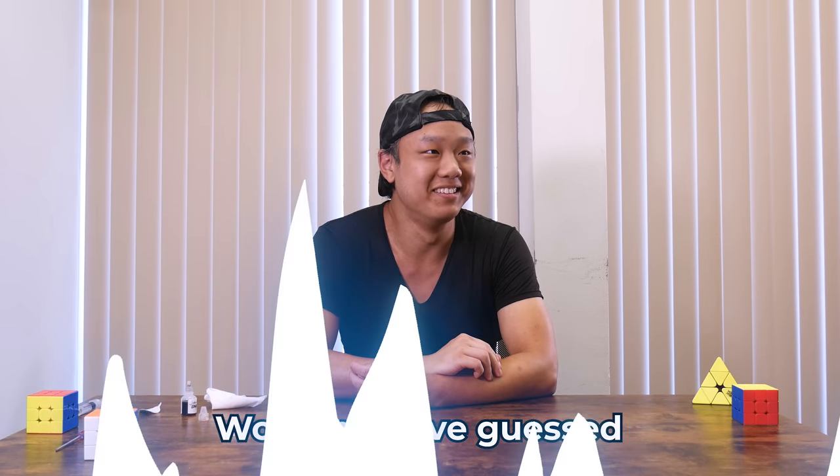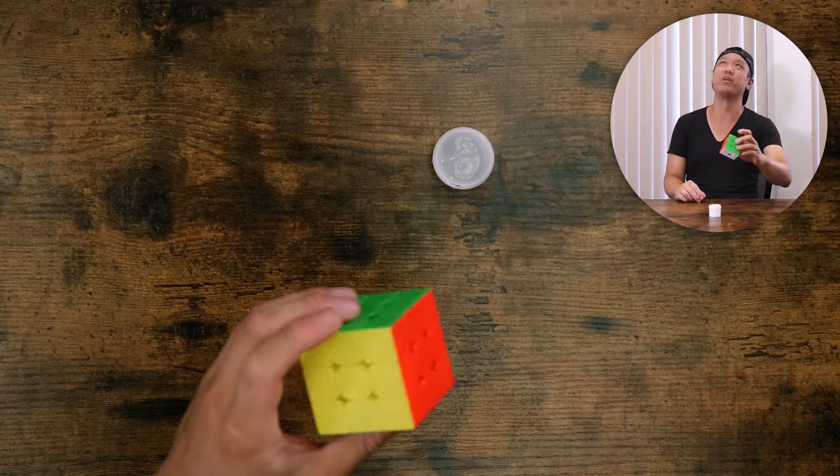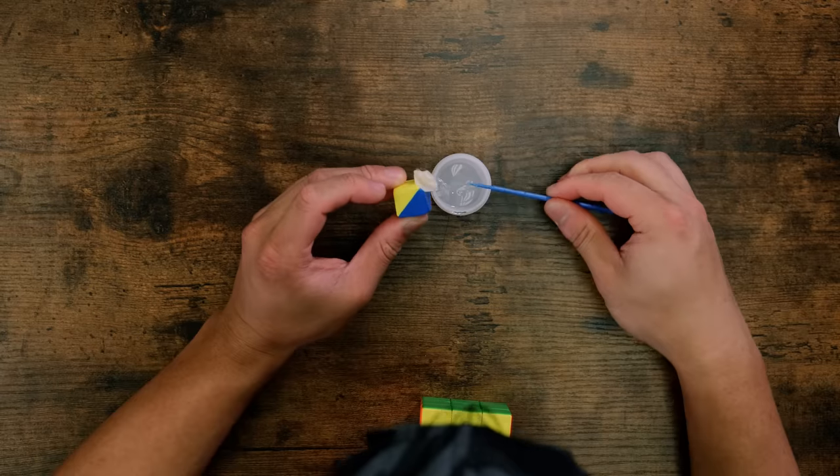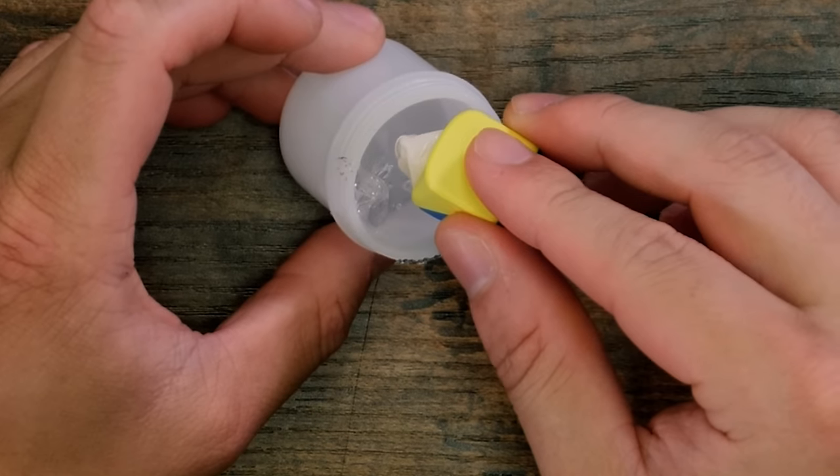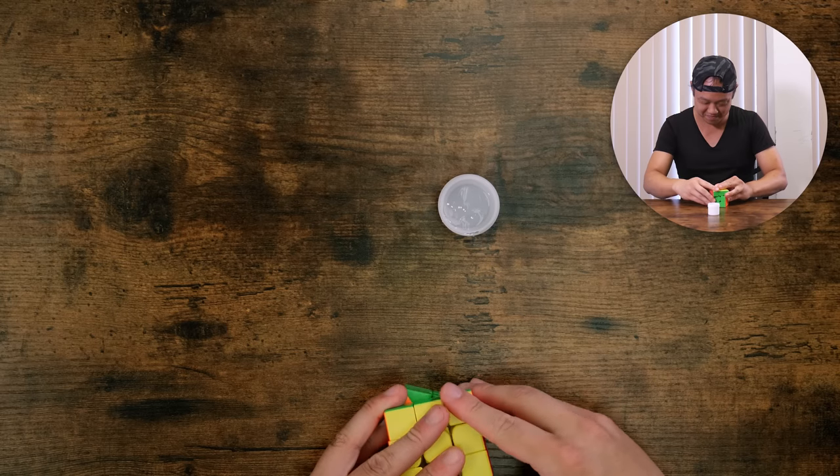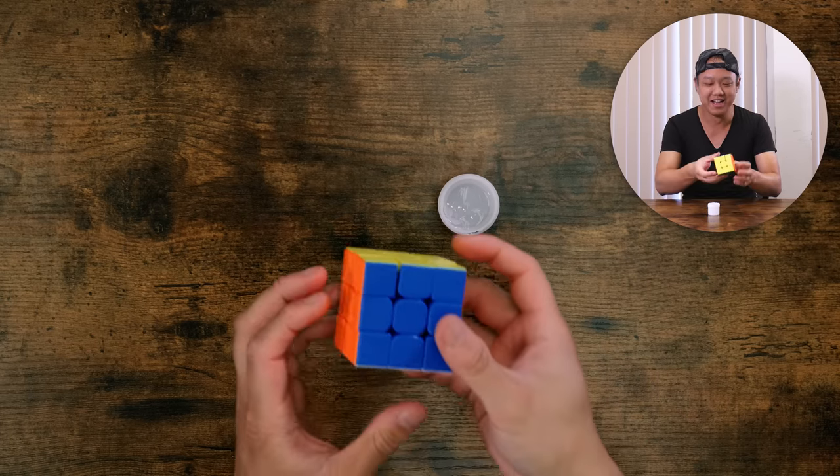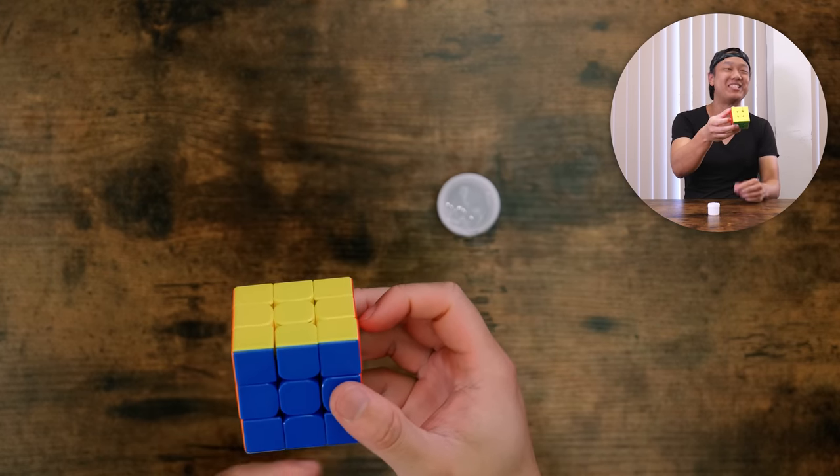All right, last cube. We're going to try the RS3M. What if you just dip the piece in it? It's like I feel like I'm eating a chicken nugget or something. Do you see that? There's like... this cube is ruined.